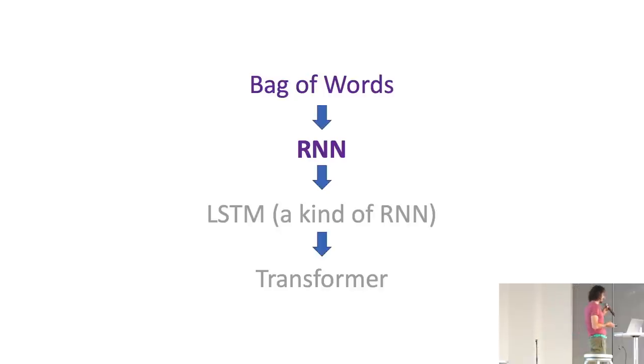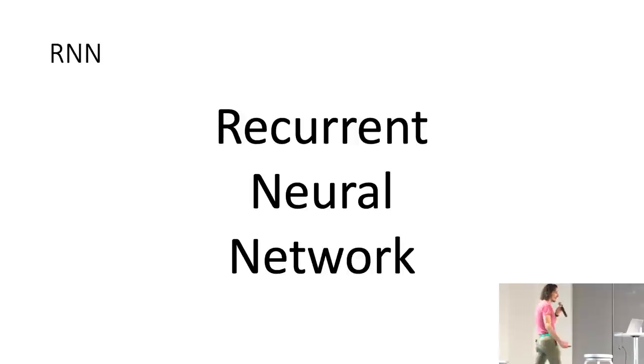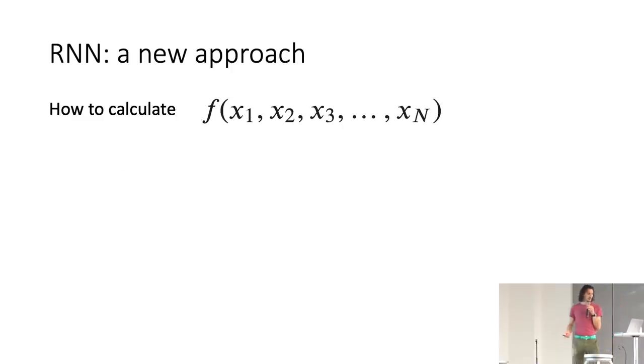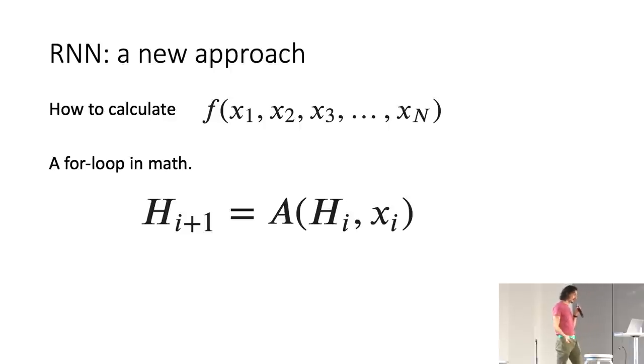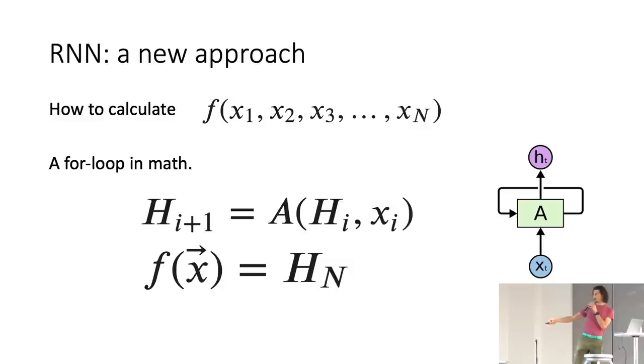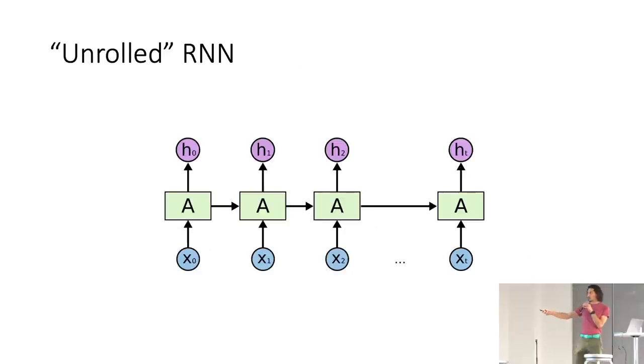So in neural network land, the natural way to solve this problem is the RNN, which is the recurrent neural network. But RNNs are a new approach to this, which asks the question, how do you calculate a function on a variable length set of input? And they answer it using a for loop in math, where they recursively define the output at any stage as a function of the inputs at the previous stages and the previous output.